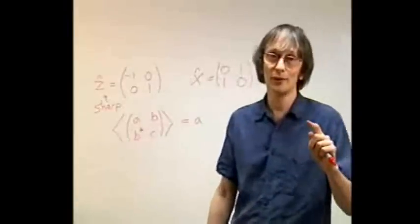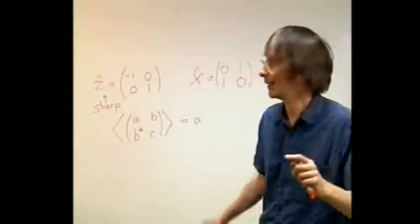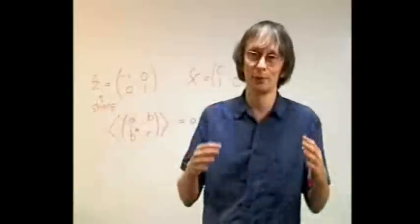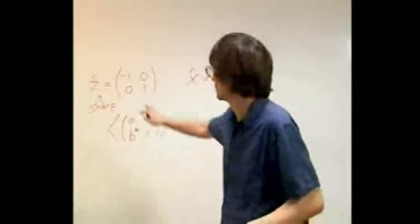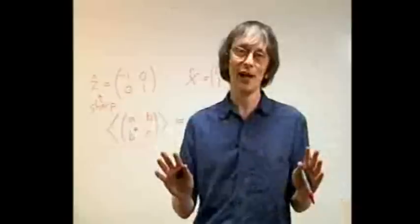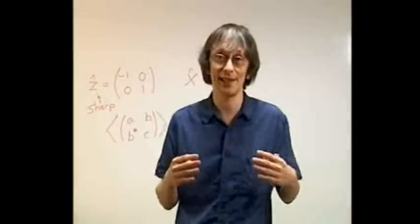So, the observable x is not sharp. In fact, it's as far from being sharp in this state as a Boolean observable can get. Z was sharp. X isn't. And that's no accident. There's a principle of quantum mechanics, called, rather misleadingly, the uncertainty principle,